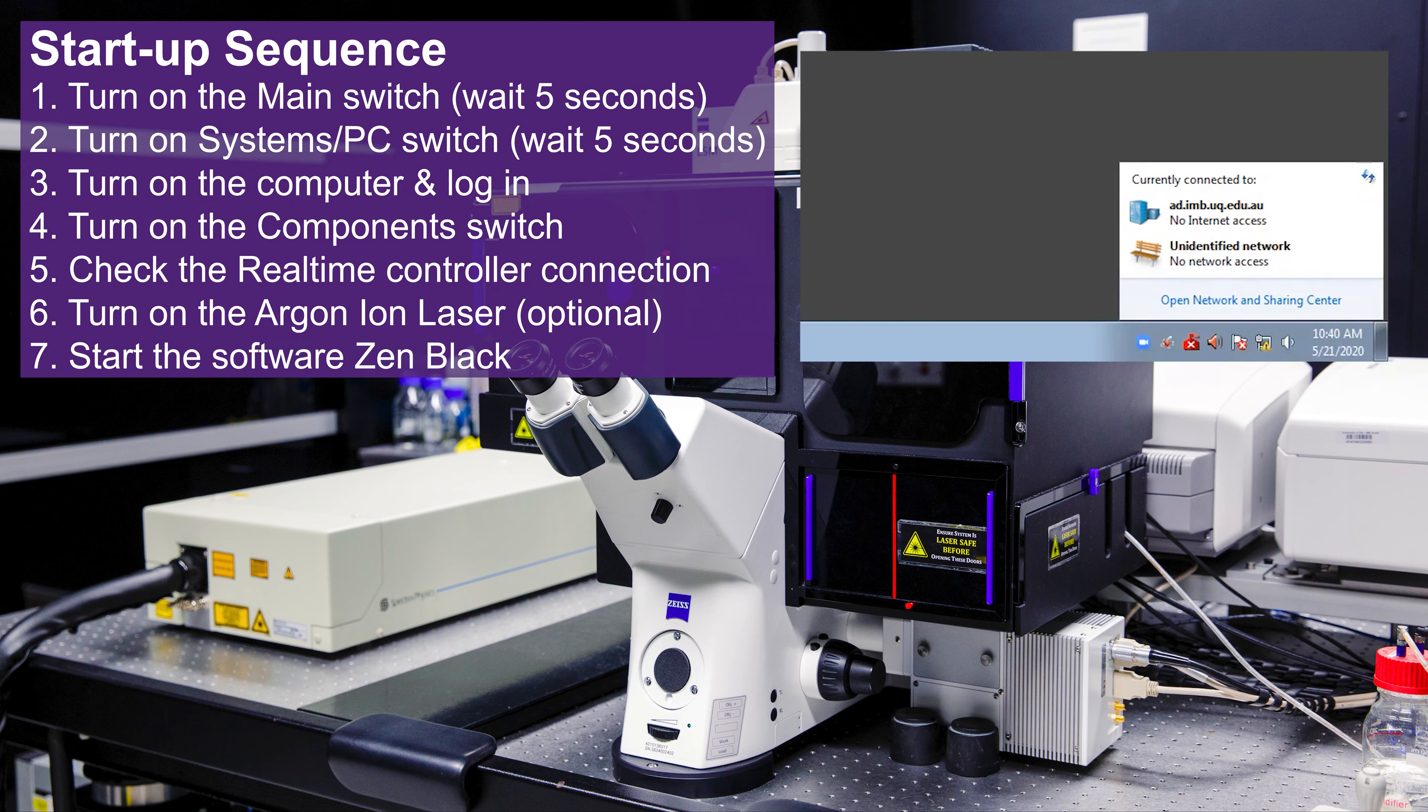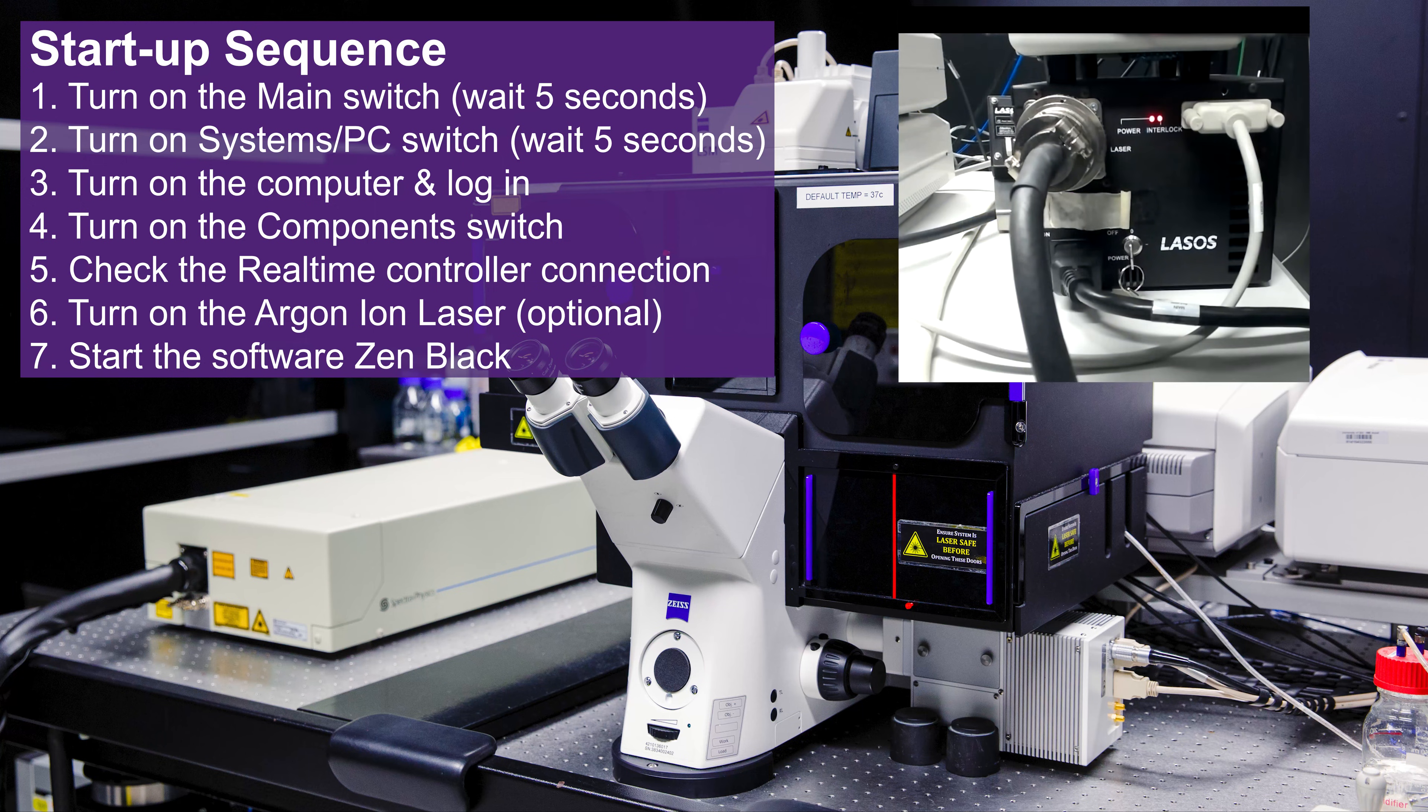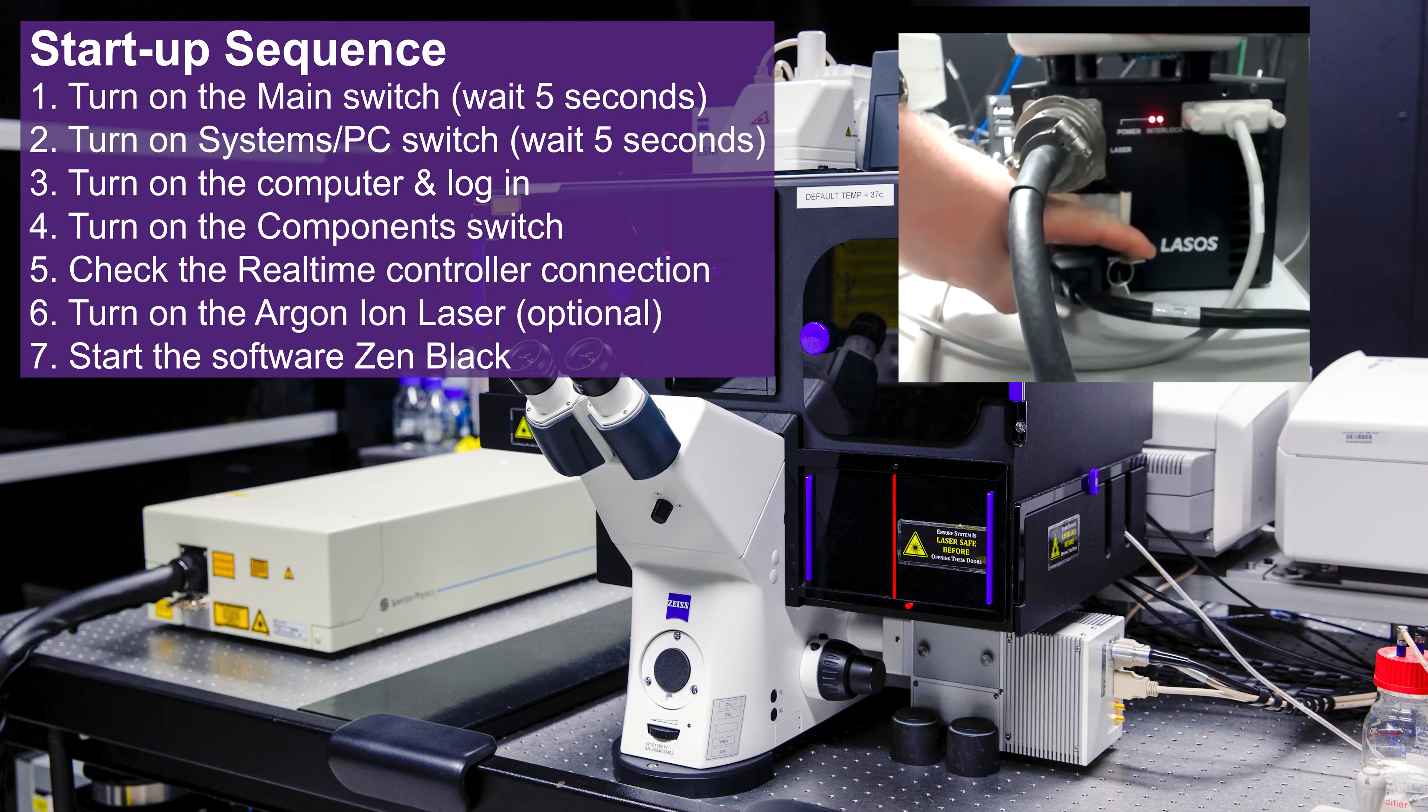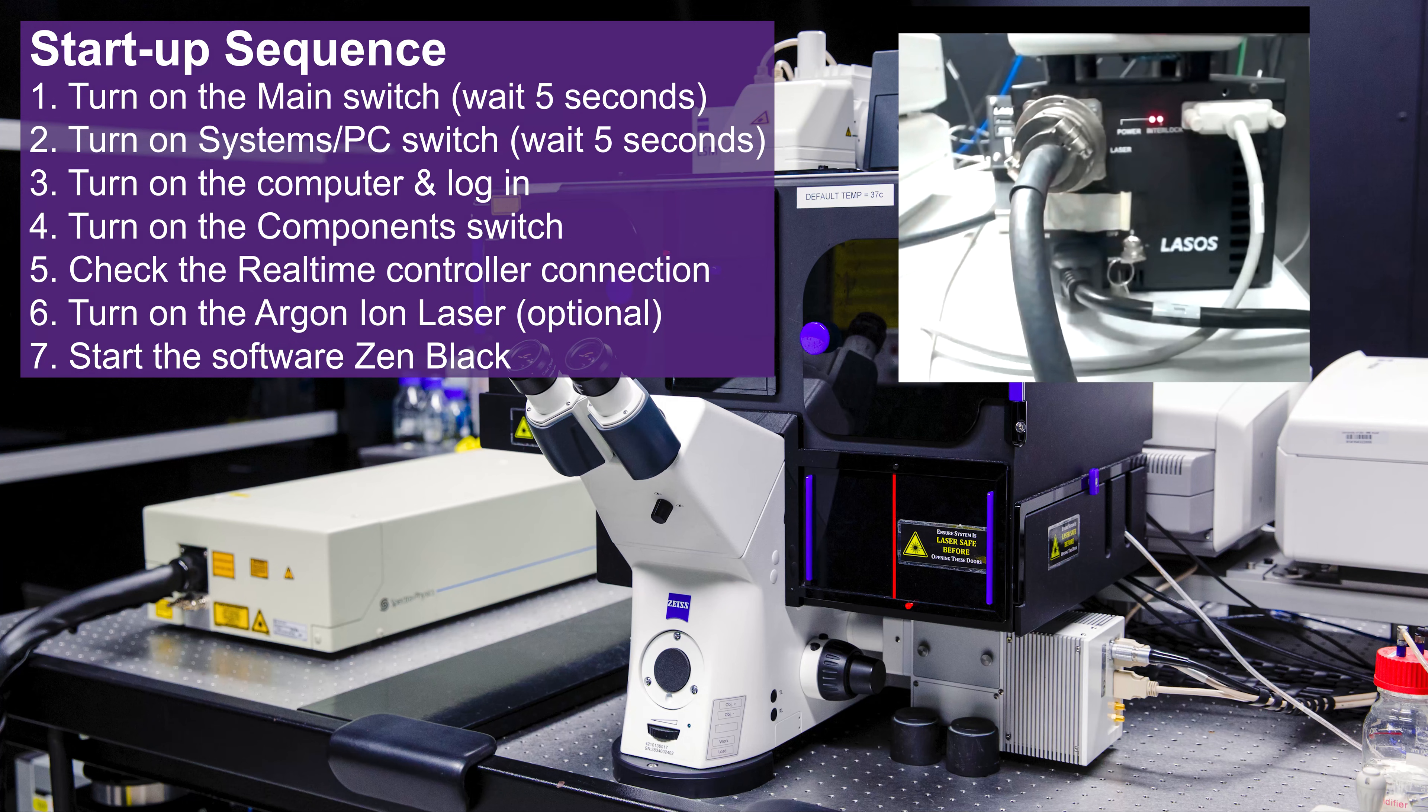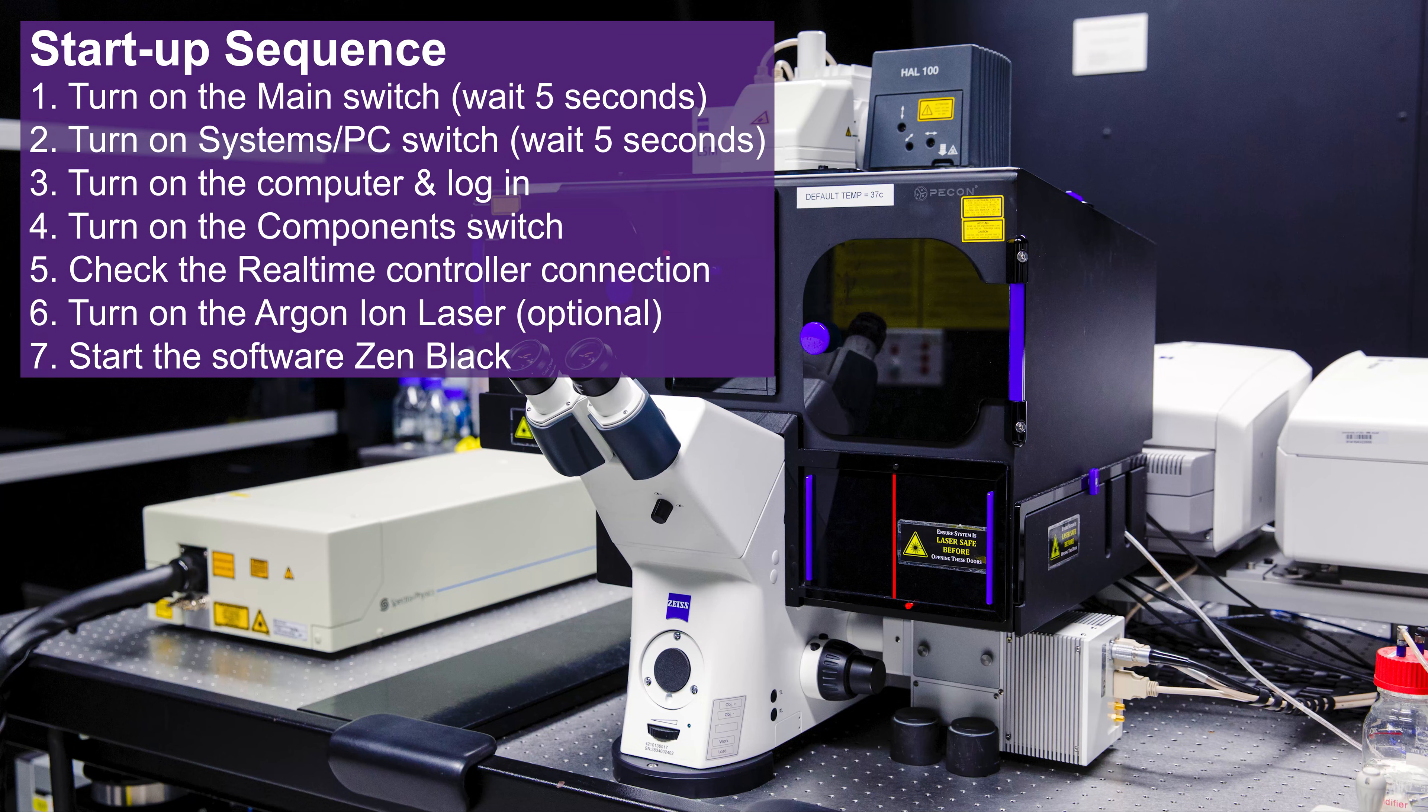If you are planning to image with the 458, 488, or 514 nanometer laser lines for cyan, green, or yellow illumination, you'll need to turn on the argon ion laser. To do this, turn the key on the front of the black lazos box from vertical to horizontal or to 3 o'clock. You'll hear the fans turn on, and the switch on the front of the unit should always be left in the on position. The laser will stabilize over time and may take up to 30 minutes to reach peak output.